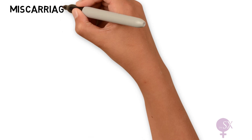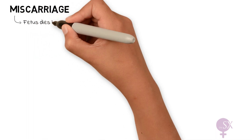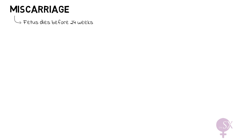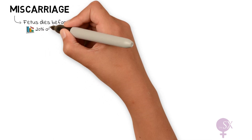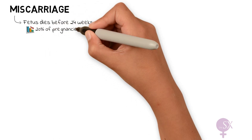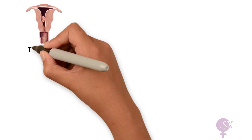A miscarriage is when the fetus dies before 24 weeks of pregnancy. Miscarriages are very common and occur in 20% of pregnancies. There are different types of miscarriages.